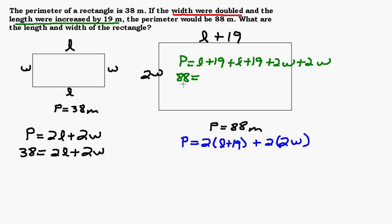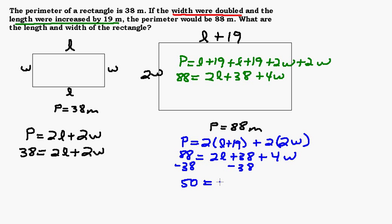We put the 88 where the P is, and then we could combine like terms. So we got 2L plus 38 when we add the 19s plus 4W. If we put the 88 in for P here and then distribute the 2 and multiply 2 times 2W, we end up with the same thing. Let's clean this blue equation up just one more step by subtracting 38 from both sides. So we have 50 equals 2L plus 4W.